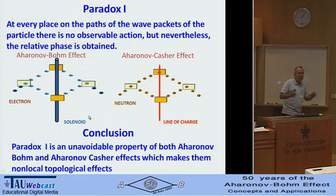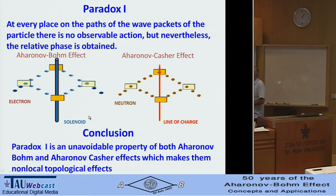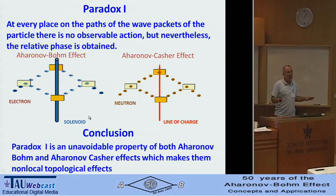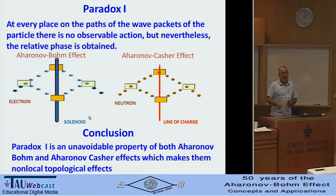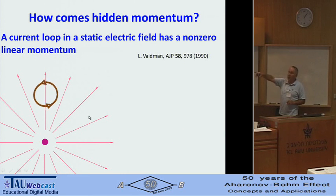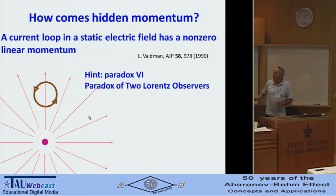There is one thing missing in my talk. The resolution of all these other paradoxes was hidden momentum, but I didn't tell you how hidden momentum arises. Instead of explaining it directly, I'll give you one more paradox without a solution, which will give you a hint to think about where hidden momentum comes from. There are all kinds of models — it's model-dependent — and you can look at this paper, but you can start with this paradox.